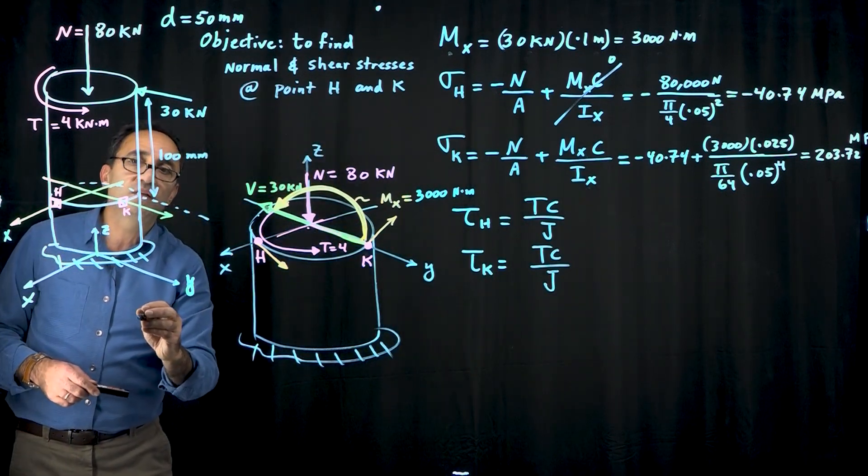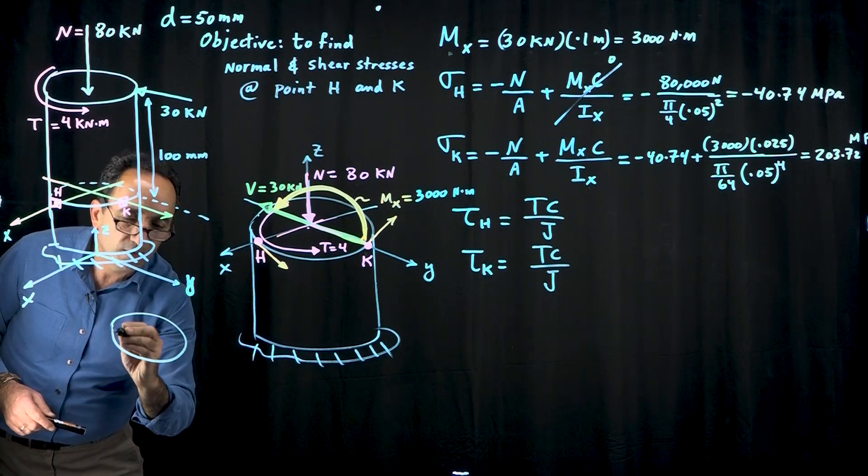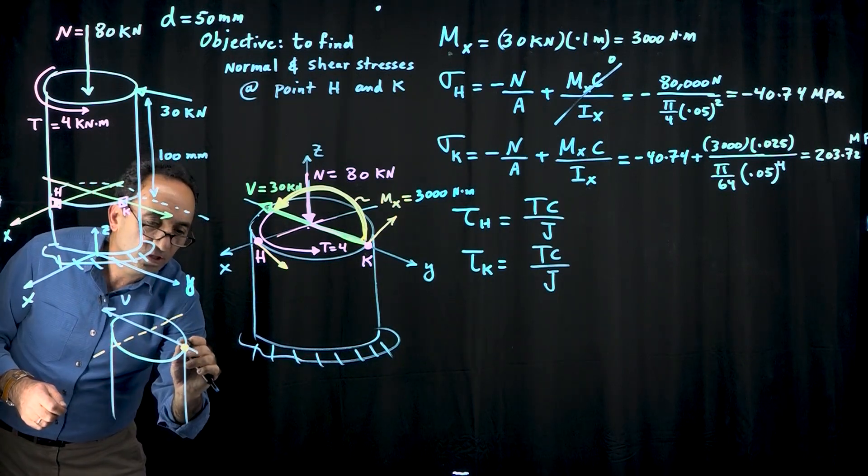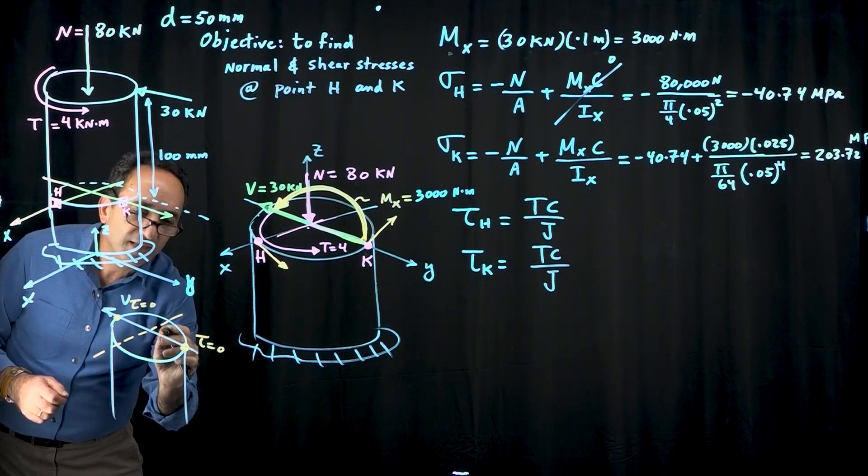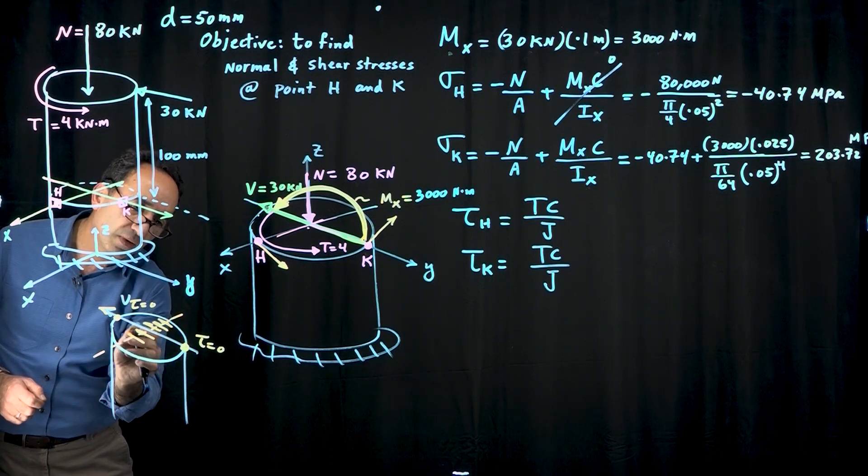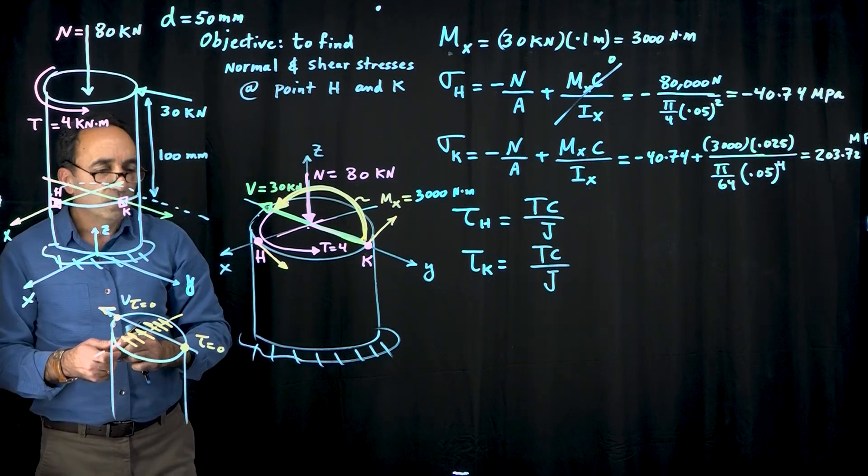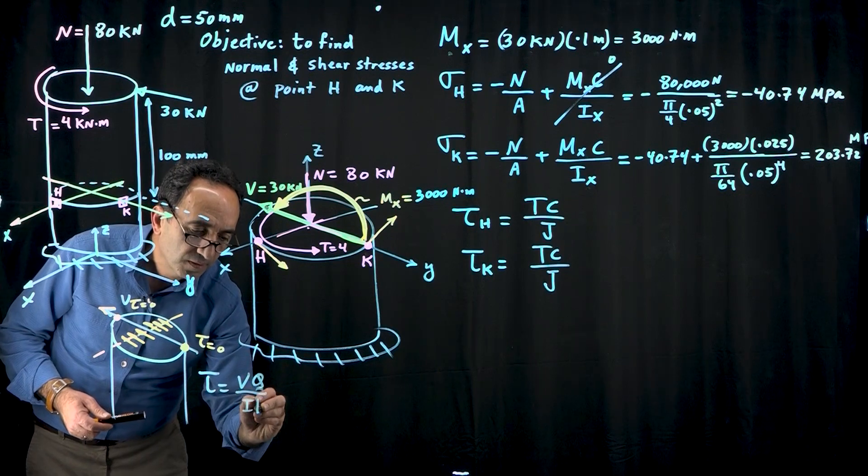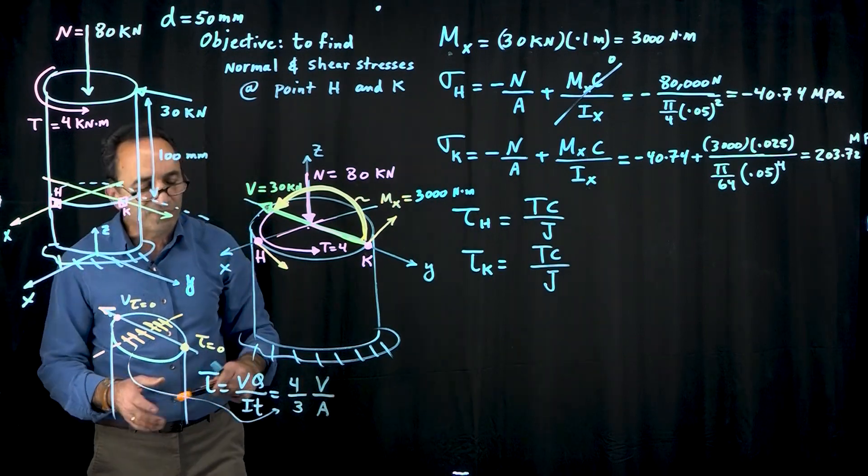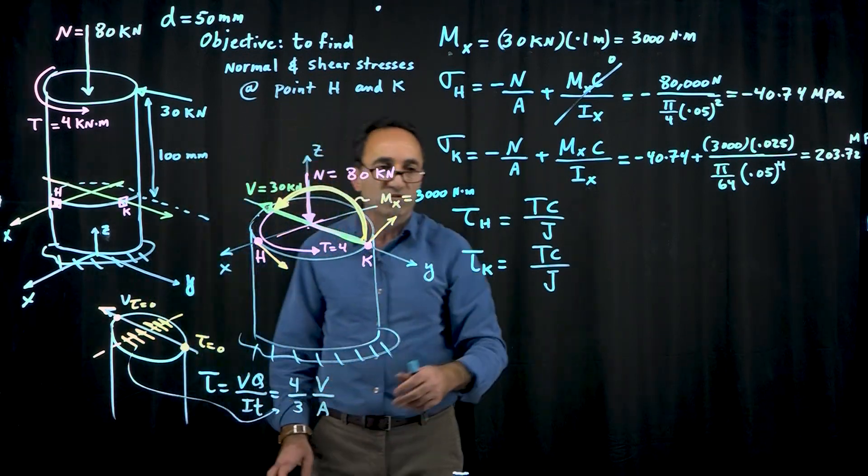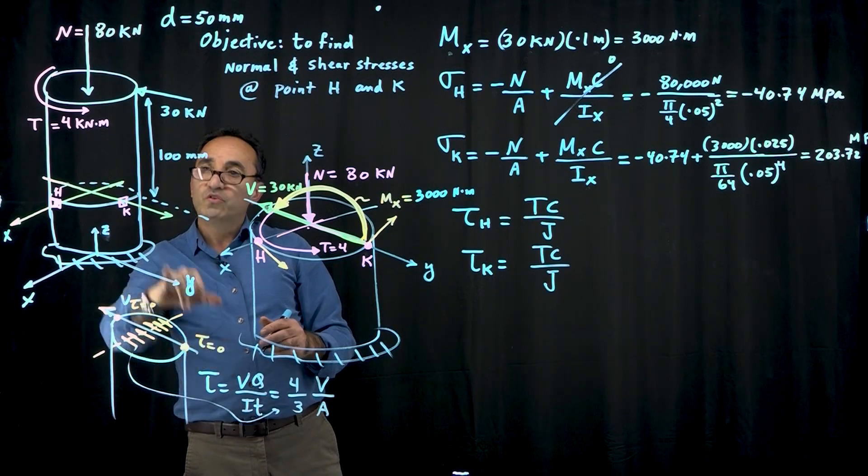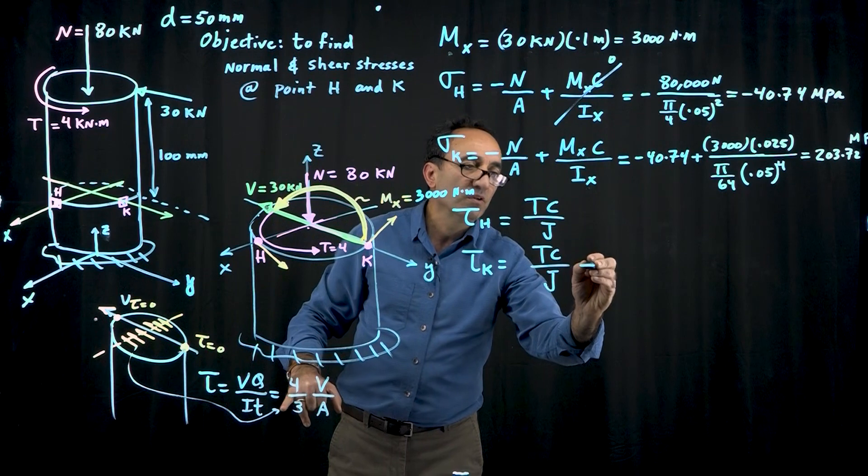Let me show you the effect of the shear load. The shear stress is zero at the top and bottom of the section and maximum at the center. The maximum shear stress is 4/3 of V over A, so you don't have to find Q and use VQ over IT. The shear stress at K due to the shear load is zero because K is on the edge, but at point H we have shear stress.